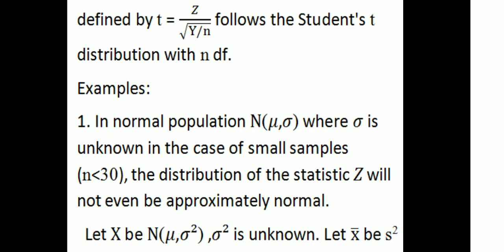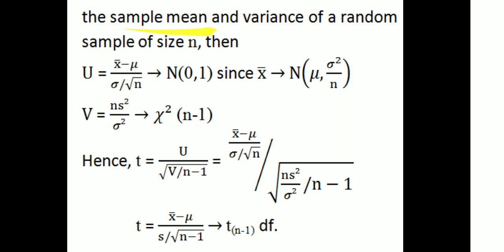Example 1: For a normal population N(μ, σ²) where σ is unknown, in the case of small samples (n < 30), the distribution of the statistic z will not even be approximately normal. Let x̄ and s² be the sample mean and sample variance of a random sample of size n. Then u = (x̄ - μ) / (σ/√n) follows N(0,1), and v = ns²/σ² follows chi-square with n-1 degrees of freedom.